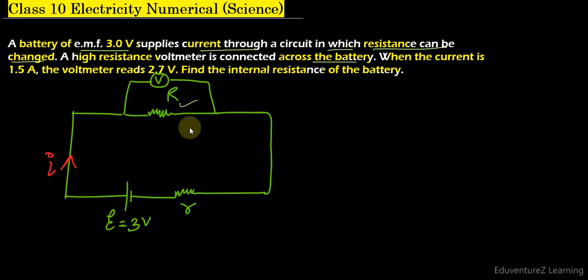Now it is given that the current is 1.5 ampere and the reading of the voltmeter is 2.7 volts. So we have to calculate the internal resistance of the battery. For calculating the internal resistance we will use the formula V equals to E minus I small r.